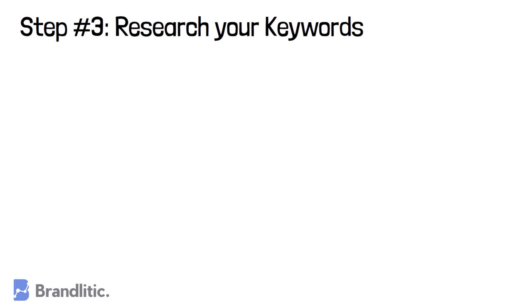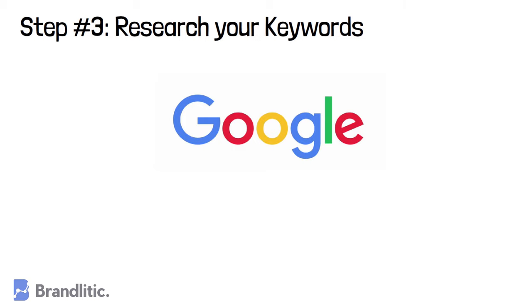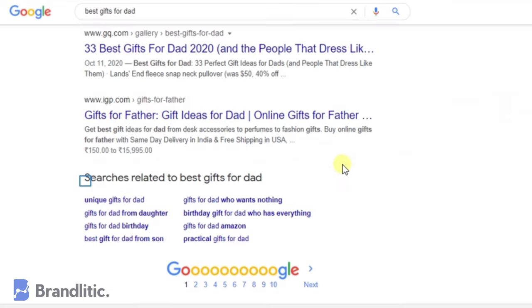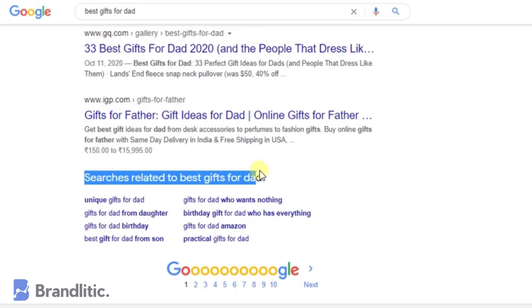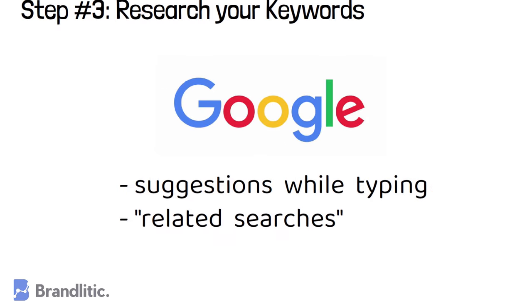Step 3: Research your keywords. After you have created your first list, it's time to dive a bit deeper. There are tools that make your keyword search easier. The first is Google itself — Google the keywords you already came up with and check the searches Google suggests while you are typing. Those are questions people actually asked on Google. You can also check related searches on Google's search results page. While Google offers tools like Google Keyword Planner, you might want a deeper insight on how a specific search term is performing.